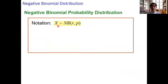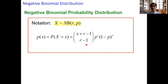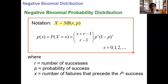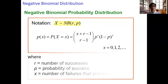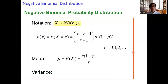So x follows the negative binomial distribution NB with parameters r and p, with the PMF: choose (x + r - 1) taken (r - 1), times p to the power r, times (1 minus p) to the power x, where x takes on values 0, 1, 2, up to infinity. The mean equals r times (1 minus p) over p, and the variance equals r times (1 minus p) over p squared.